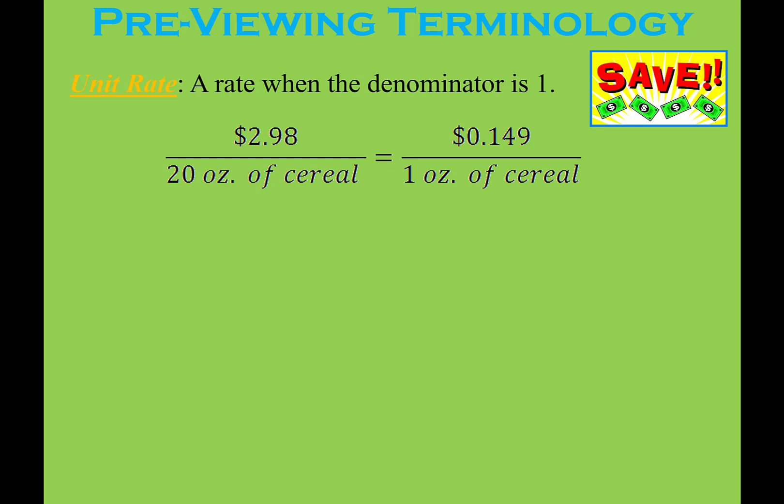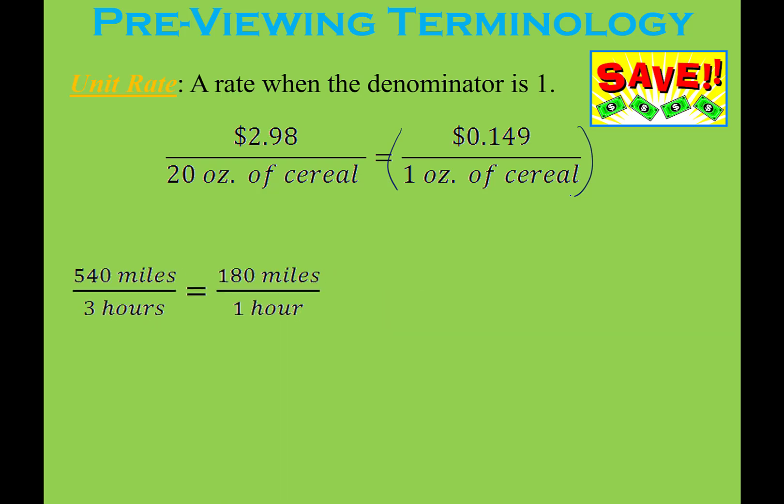A unit rate is when the denominator is one. So with the cereal example, $2.98 per 20 ounces is just a regular rate. But the unit rate allows you to compare that box to different sizes or brands to see which one is cheaper. If you go 540 miles in three hours, that's 180 miles per hour — so probably not a car. And 12 ounces for three servings gives you four ounces per one serving. The unit rate lets you find the comparison between two units with one of those units set to one.